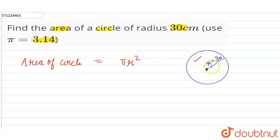So the value of π is 3.14 and the radius is given 30 centimeters, so 3.14 into 30 into 30. So 3.14 as it is, 3 into 3 is 9 and 2 zeros, right. So 30 into 30 is 900.